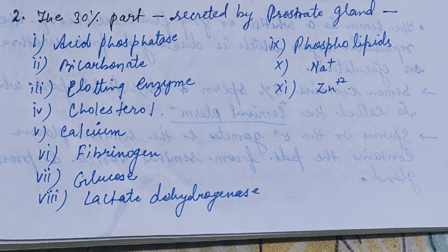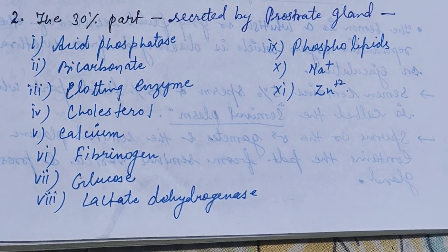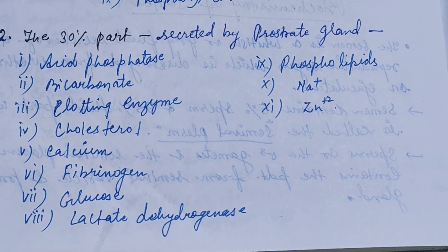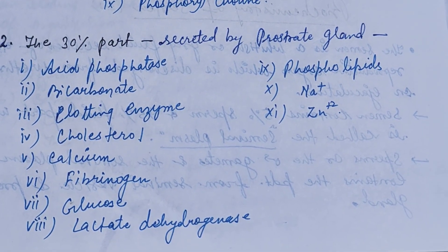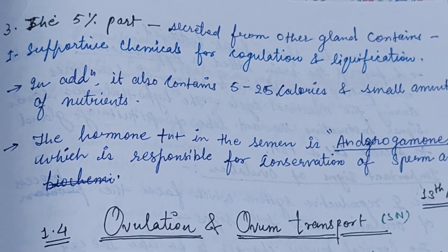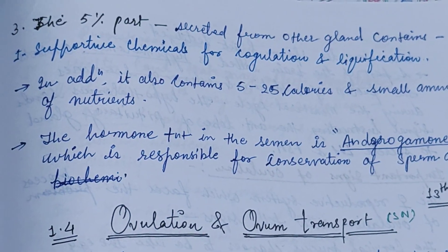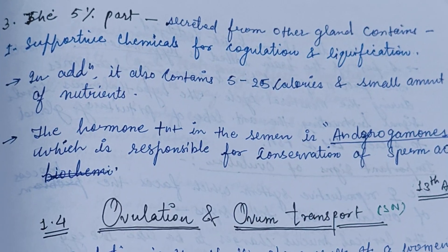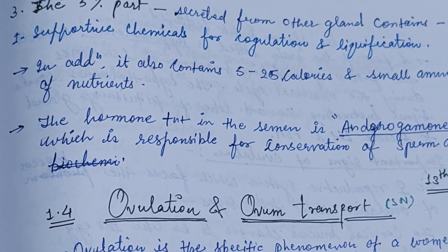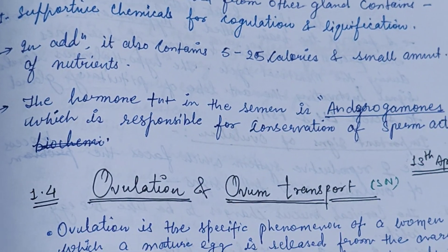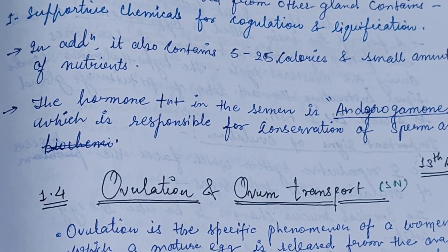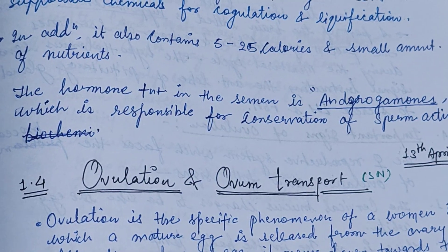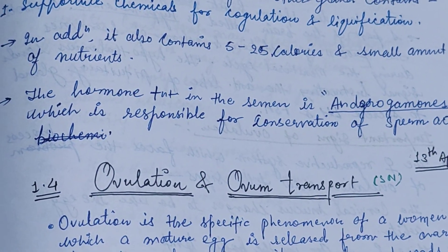The prostate gland secretion also contains phospholipids, sodium, and zinc. The last 5% part secreted from the other glands contains supportive chemicals for coagulation, liquefaction, and adhesion. The semen also contains 5 to 25 calories and a small amount of nutrients.